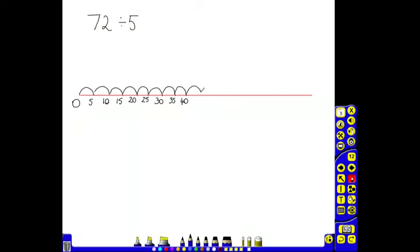9 lots of 5, 45. 10 lots of 5, 50. 11 lots of 5, 55. 12 lots of 5, 60. 13 lots of 5, 65. 14 lots of 5, 70.